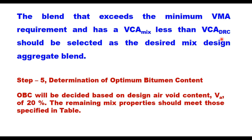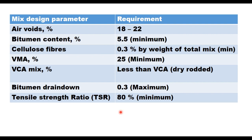Step 5 is determination of optimum binder content. Once the aggregate blend is decided, find the optimum binder content based on a design air voids content of generally 20%. The mix properties should meet: bitumen content not less than 5.5%, cellulose fiber 0.3%, VMA minimum 25%, VCA less than VCA_DRC, drain-down maximum 0.3%, and TSR 80% or above.